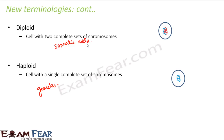In haploid cells, there is either the father's set or the mother's set of chromosomes. For example, sperm cells contain the father's set of chromosomes, and the egg cell contains the mother's set of chromosomes.